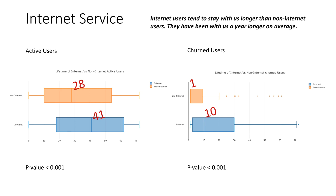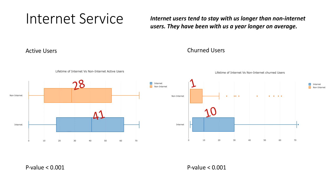This slide looks like the last, but this time on the left we're comparing active internet users to active non-internet users. Since the difference is statistically significant, indicated by the low p-value, these two distributions are different. Hence, we can say that internet users are older than our non-internet users. We see a similar case in churned users too — internet users also stayed with us longer than users who didn't have an internet subscription.